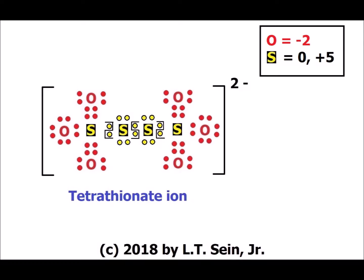Next we look at tetrathionate ion, which resembles two thiosulfates joined together at their terminal sulfur atoms. Again we have sulfur in two different environments. The sulfur atoms attached to oxygens have only one electron each, giving an oxidation number of +5. The two central sulfur atoms share a bond with each other; one electron is counted per central sulfur, giving each 6 electrons and an oxidation number of 0. So in tetrathionate, two sulfur atoms have an oxidation number of +5 and two have an oxidation number of 0.